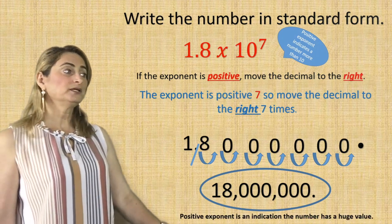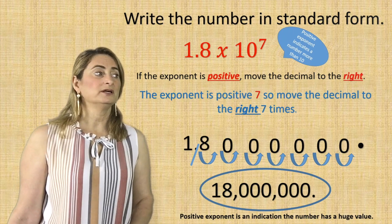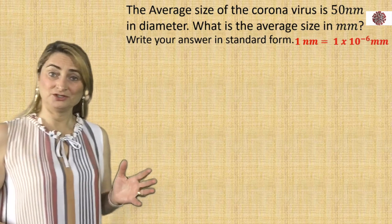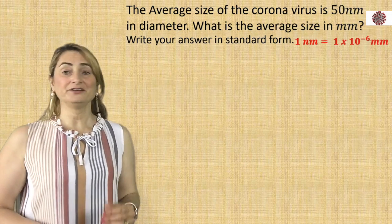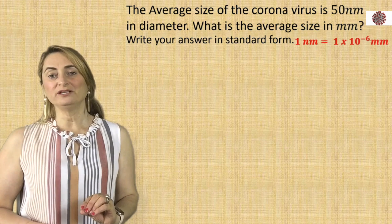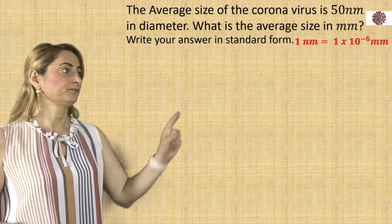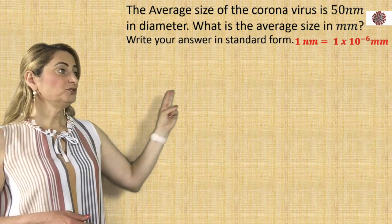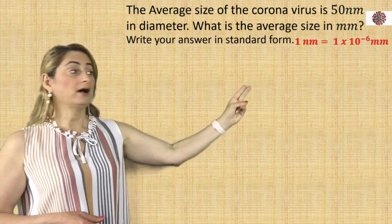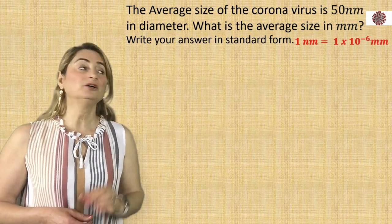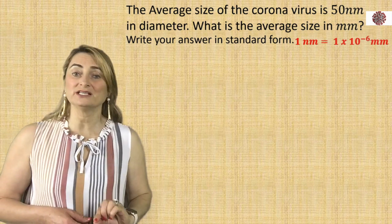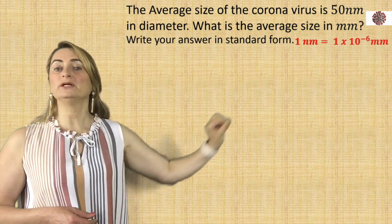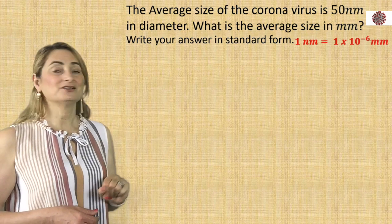Here's a word problem. The average size of the coronavirus is 50 nanometers in diameter — very small. What is the average size in millimeters? Write your answer in standard form, knowing that 1 nanometer equals 1 times 10 to the power of negative 6 millimeters. So we're going to convert from nanometers to millimeters to see how big the size of the coronavirus is.